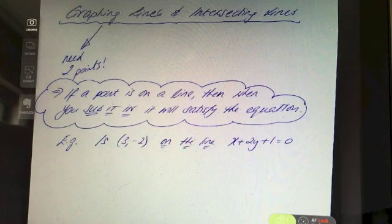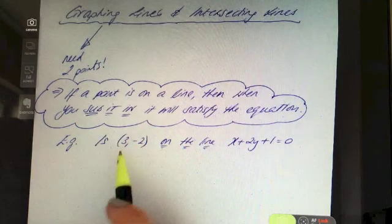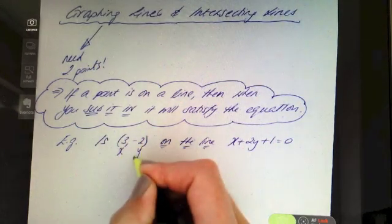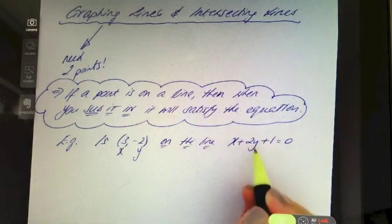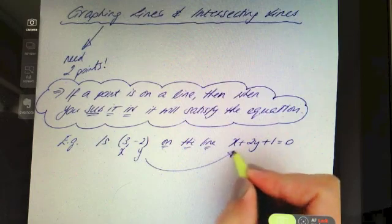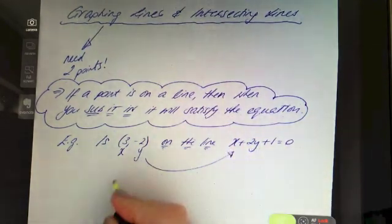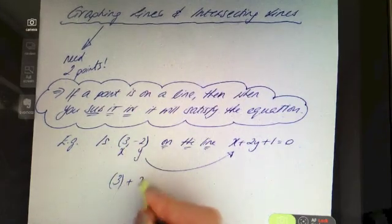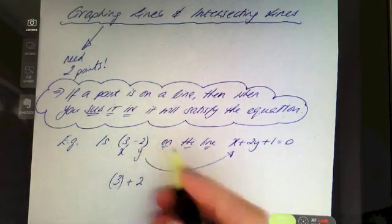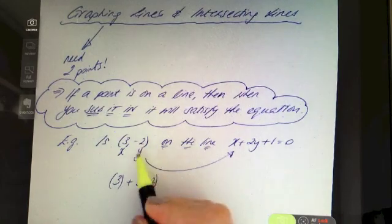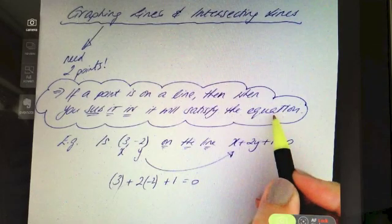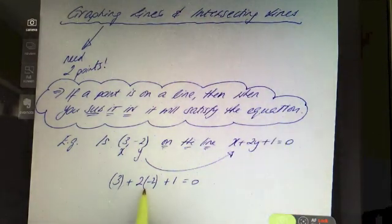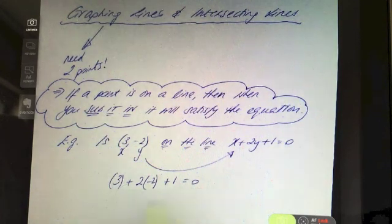For example, is (3, -2) on the line x + 2y + 1 = 0? We take the point — x is 3, y is -2 — and sub those values into the equation. So instead of x + 2y we get 3 + 2(-2) + 1. If it satisfies the equation, the left hand side should equal the right hand side.